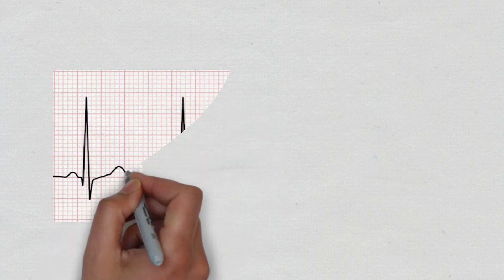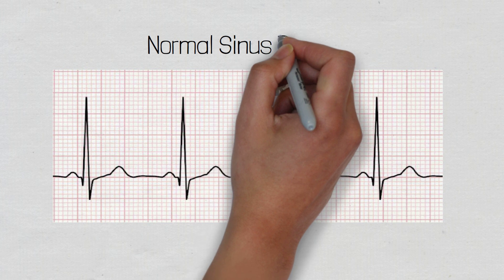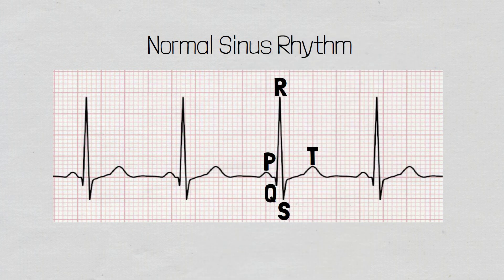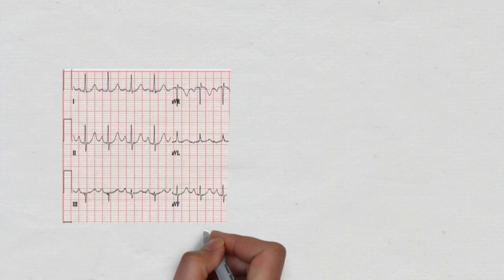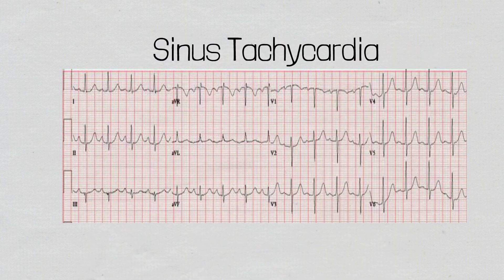The changes on an ECG during a pulmonary embolism will be related to the strain being placed upon the right side of the heart. Looking at our normal ECG, we have a P, Q, R, S and T wave — normal sinus rhythm. Firstly, we may see a sinus tachycardia, a heart rate typically over 100 beats per minute, seen in 44% of patients suffering with an acute pulmonary embolism. Remember to take into account the patient's baseline heart rate, such as patients who are on beta blockers.